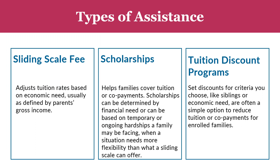When it comes to offering financial assistance to families, there are three common types: sliding scale fees, scholarships, and discounts based on certain criteria. Sliding scale fees adjust tuition based on economic need, usually as defined by the family's gross income — all the money a family takes in before any expenses or taxes. You can and should ask for pay stubs to verify gross income. You can set your sliding scale based on where their income falls concerning the state median income (SMI) or the federal poverty level, opting for one tuition level below a certain threshold, say 85% of SMI, or various rates for different income levels and factors such as having multiple children in the program.